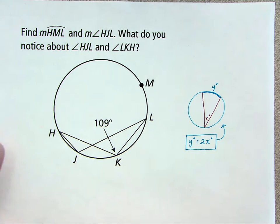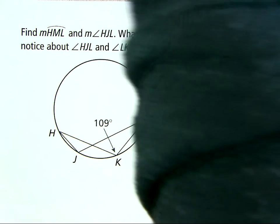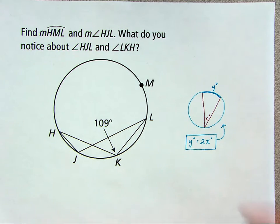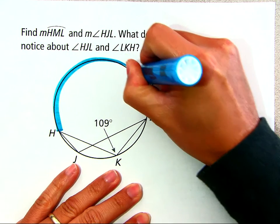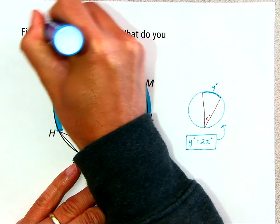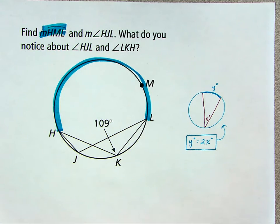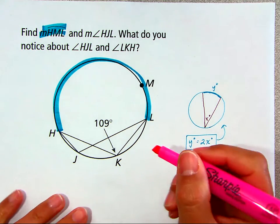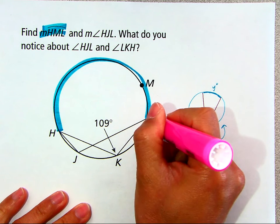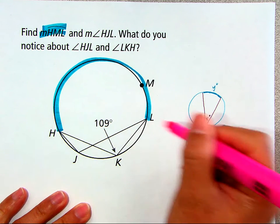So we have this circle here, and we want to find the measure of arc HML. So let's color code that. And HML would be that arc there. And so we can see that that arc subtends this angle right here, angle HKL.